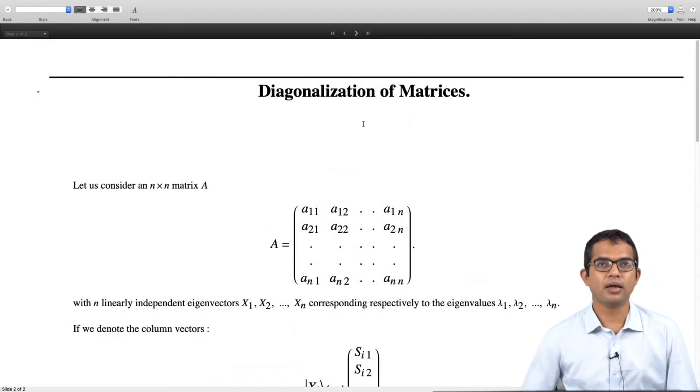Let us consider an n by n matrix A. I am explicitly writing it out. It has all these elements of this matrix. There are n squared of these.